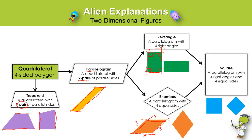Next is the square, and a square is kind of like a combination of the rectangle and the rhombus together. It is a parallelogram that has four right angles and four equal sides. What makes it a parallelogram? Well, it has two pairs of parallel sides — there's one pair and here's the other pair.